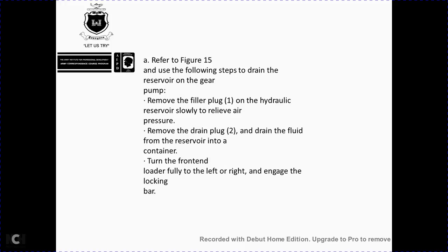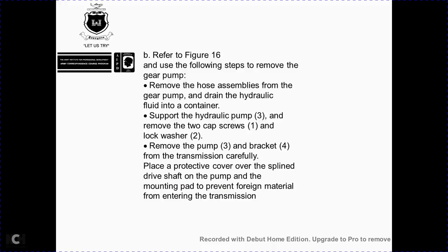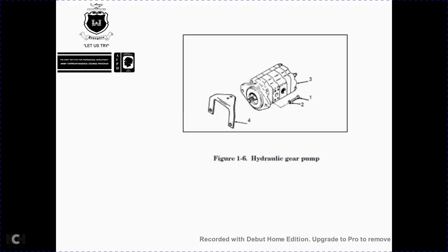Turn off the front end and fully left and right, then engage the locking bar. Figure 1-5 shows the hydraulic reservoir on the J1 case model M24C scoop loader. Refer to figure 1-6. Use the following steps to remove the gear pump: drain the hydraulic fluid into a container, support the hydraulic pump, remove the two cap screws and lock washers, remove the pump from the bracket and transmission, and carefully protect with a cover over the spline drive shaft of the pump with protective pads to prevent foreign material from entering the transmission.